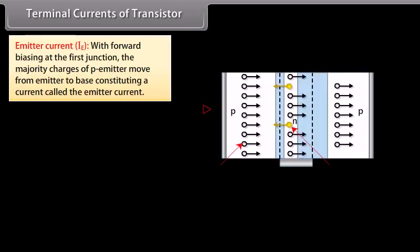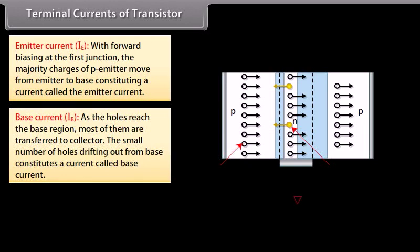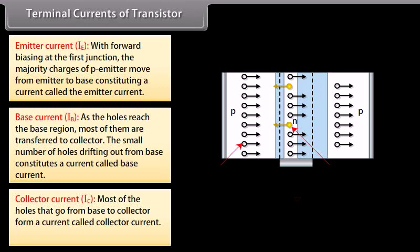Terminal currents of transistor (considering PNP transistor): Emitter Current IE: With forward biasing at the first junction, the majority charges of the P emitter move from emitter to base, constituting the emitter current. Base Current IB: Most holes are transferred to the collector; the small number drifting out from the base constitutes the base current. Collector Current IC: Most holes going from base to collector form the collector current. The relationship is: IE = IB + IC. The current concepts are the same in PNP and NPN, except all currents are directed opposite in the two cases.